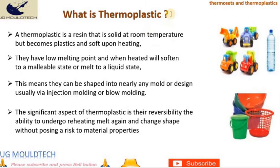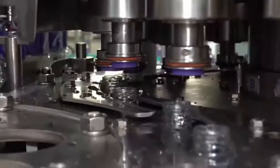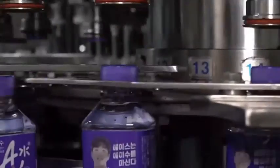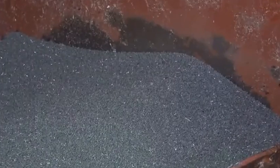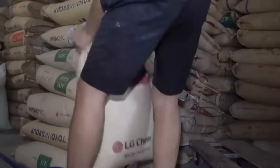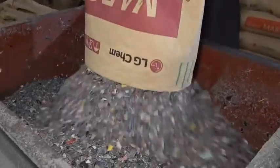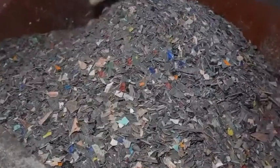What is thermoplastic? A thermoplastic is a resin that is solid at room temperature but becomes plastic and soft upon heating. They have a low melting point and when heated will soften to a malleable state or melt to a liquid state. This means they can be shaped into nearly any mold or design, usually via injection molding or blow molding. A significant aspect of thermoplastics is their reversibility — the ability to undergo reheating, melt again, and change shape without posing a risk to material properties.